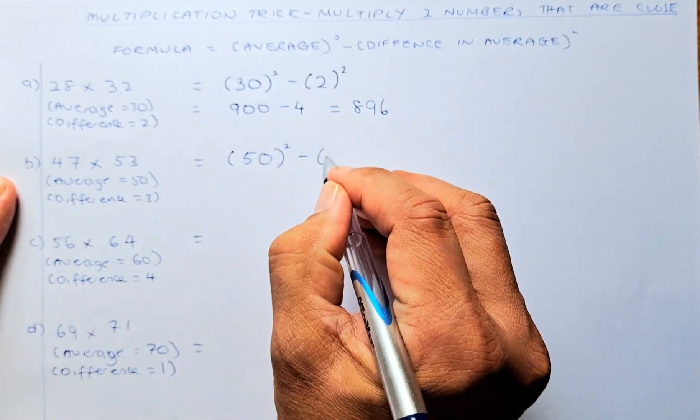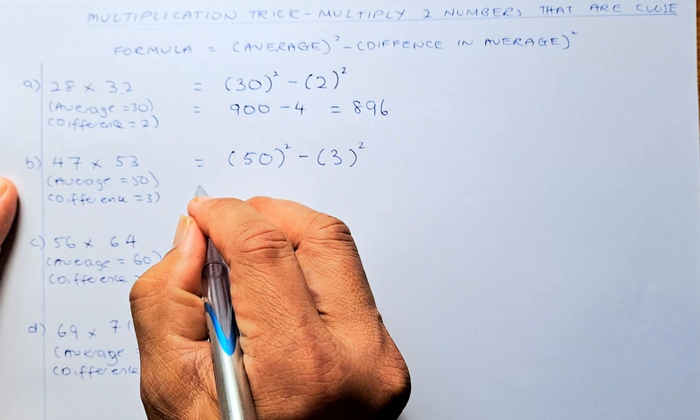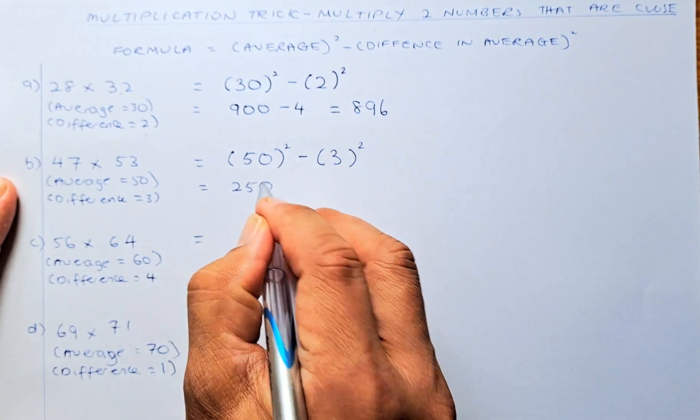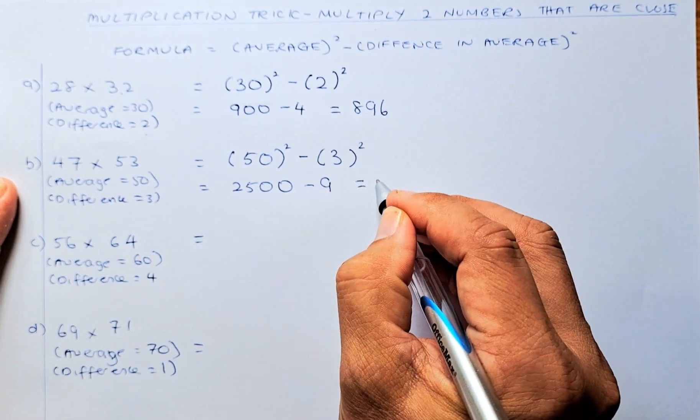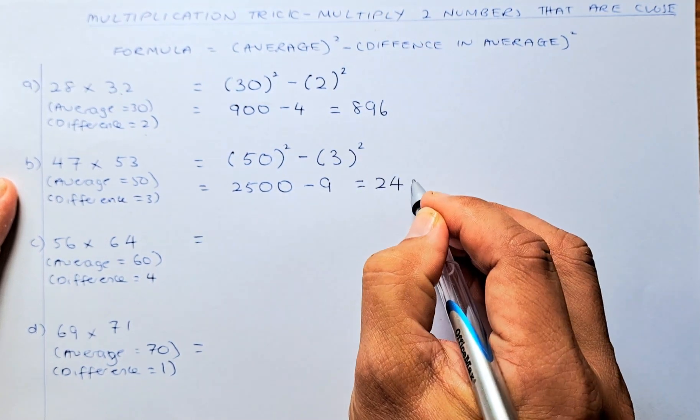minus the difference squared, 3 squared. 50 squared is 2,500 and 3 squared is 9, and the answer is 2,491.